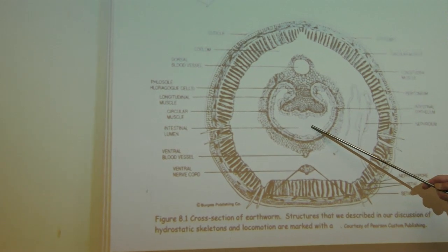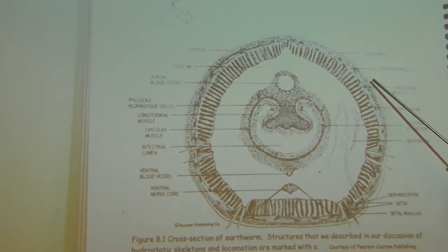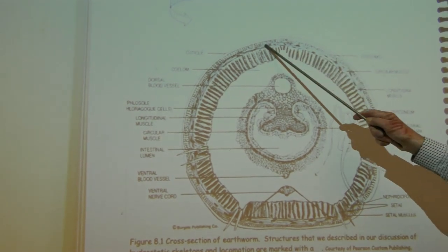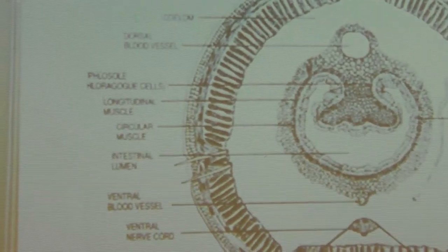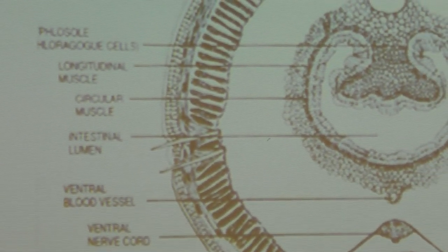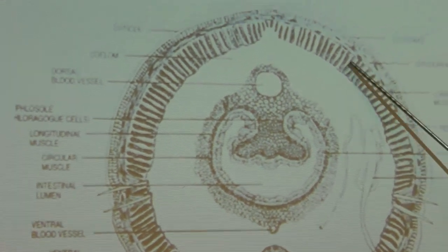Just inside we have an epidermis and we have a cuticle. Just inside that there's a ring of circular muscles that go the whole way around the circumference of the worm. That's one layer of muscles. And these larger internal to that are these larger feathery type muscles which are the longitudinal muscles.